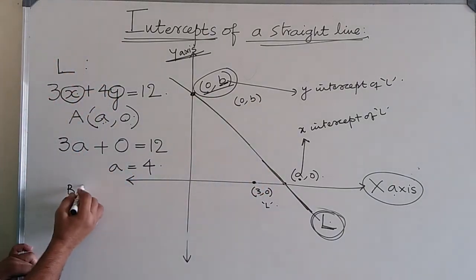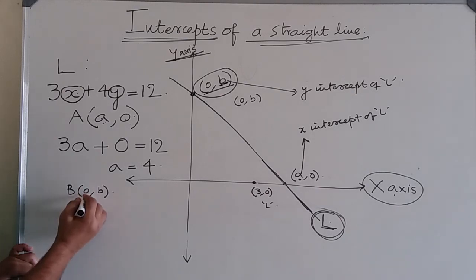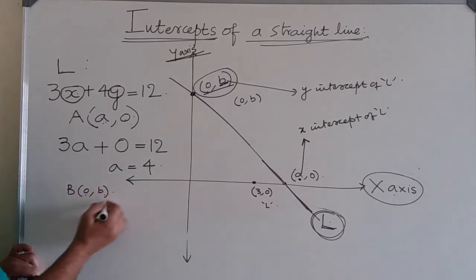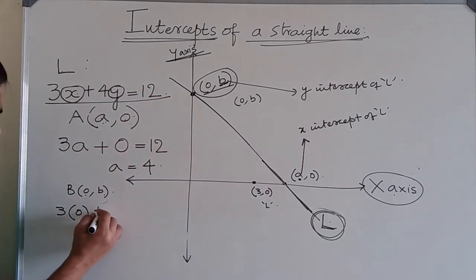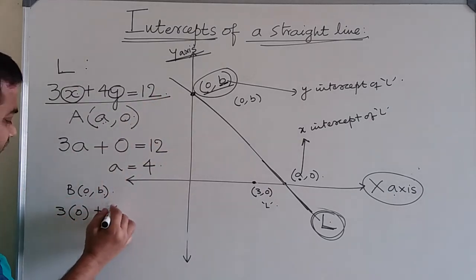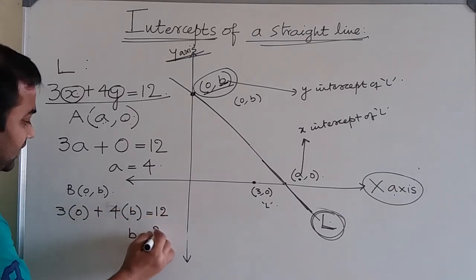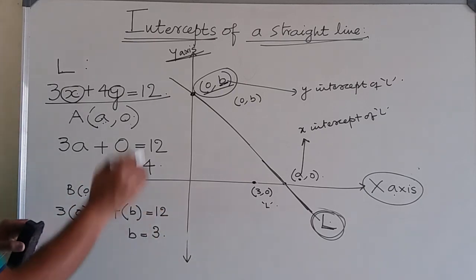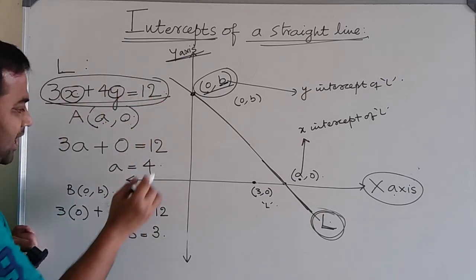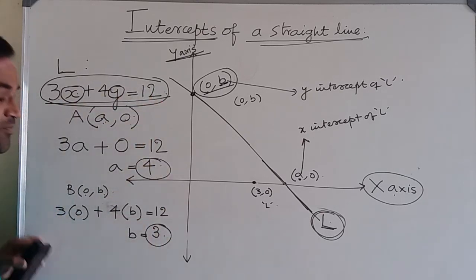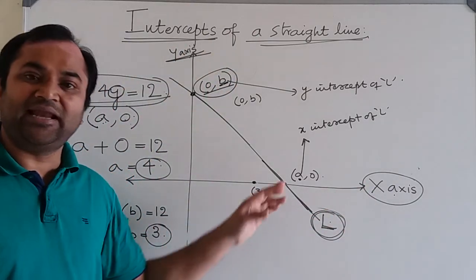Similarly, to find the y-intercept, take the point as (0, b) through which the line is passing. Since the point (0, b) lies on line L, substitute 0 in place of x and b in place of y, and determine the y-intercept b, which will be 3. So the x-intercept and y-intercept of line L with this equation are 4 and 3 respectively.